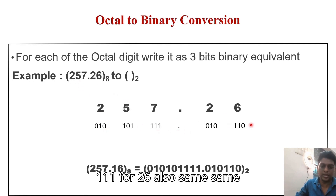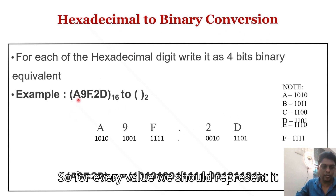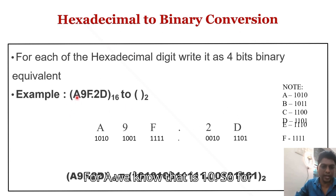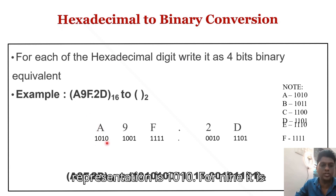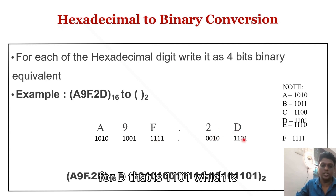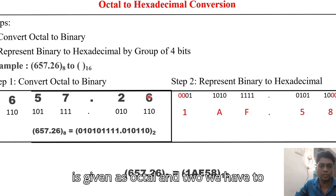For hexadecimal to binary conversion, represent each hexadecimal digit as its 4-bit binary equivalent. For example: A (10) is 1010, 9 is 1001, F (15) is 1111, 2 is 0010, and D (13) is 1101.